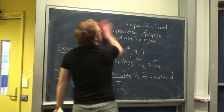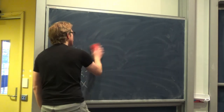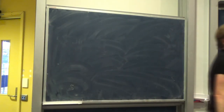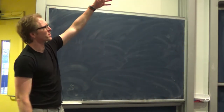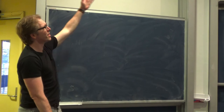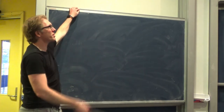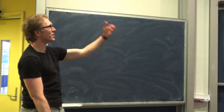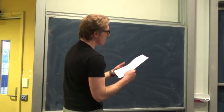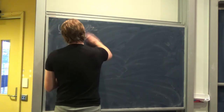We need to check that this definition of continuity is correct by relating it to epsilon-delta from real analysis. From the intrinsic point of view, this definition is natural: a continuous map is one that preserves the structure, meaning inverse images of open sets are open. Now let's verify that the open ball B_epsilon(x) is actually an open set in the topology induced by a metric.